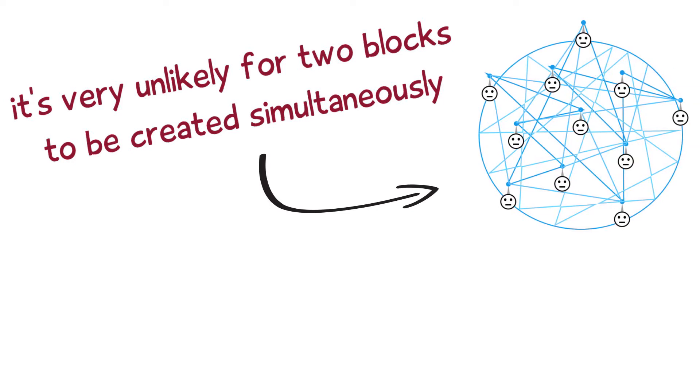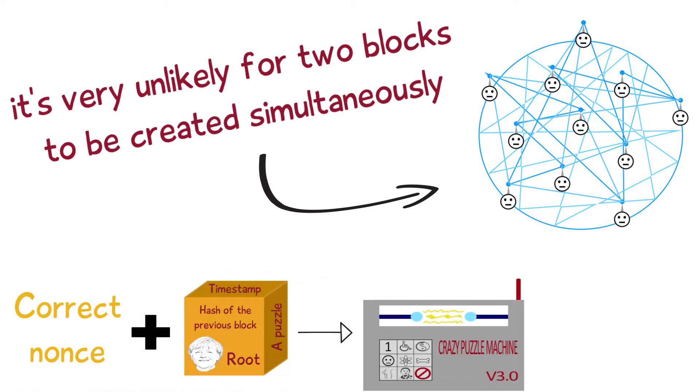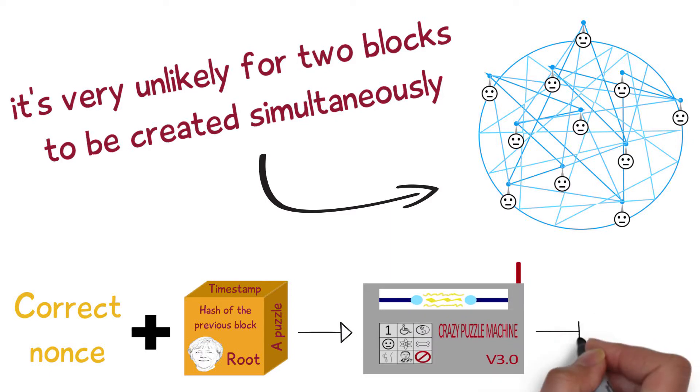On top of that it's very easy to check if someone put in the work, since you only need to know the right nonce that is used. Combine it with the data of the block and hash it once to find out what the answer is. Basically it's incredibly hard to find the right answer but incredibly easy to check its validity.